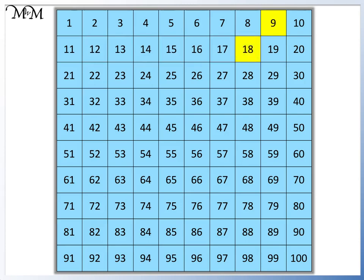Adding 9 more equals 27, 36, 45, 54, 63, 72, 81, 90 and 99. We can see that the multiples of 9 make a diagonal pattern on the number grid.